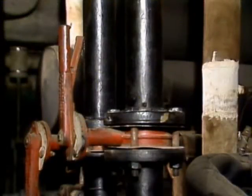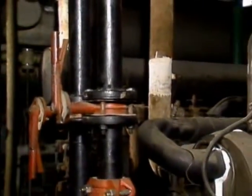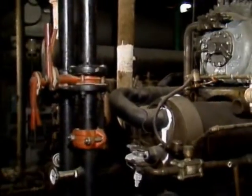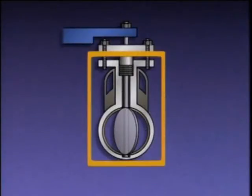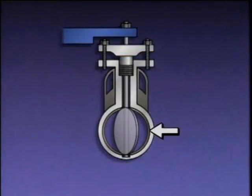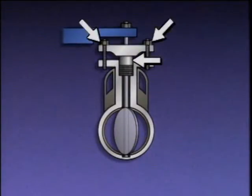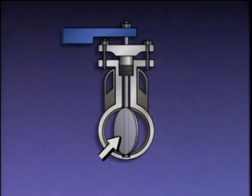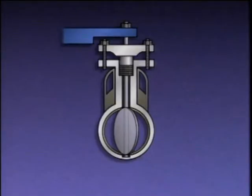Butterfly valves are used for a variety of purposes in industrial plants. They typically have round, relatively thin valve bodies, so they take up much less space in piping than many other valve types. A butterfly valve consists of a valve body, a seating area or seat, a disc, a stem with a handle, a stuffing box, packing, and a packing gland with gland nuts. The disc is slightly smaller in diameter than the inside of the piping and offers little obstruction to flow when the valve is fully open.